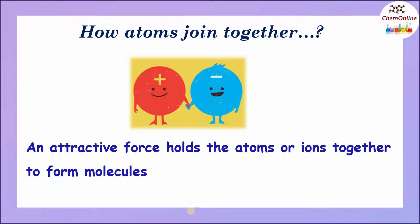We cannot apply any glue or stitch two atoms together. But definitely there must be some attractive force that holds the atoms or ions together to form molecules. In chemistry, we call this attractive force a chemical bond. So, the term chemical bond refers to the attractive force that holds the constituent atoms or ions together to form stable molecules.